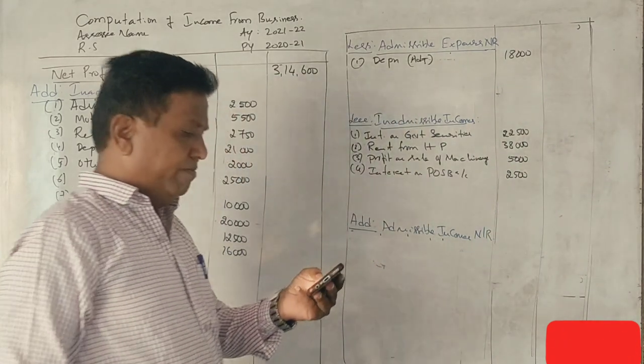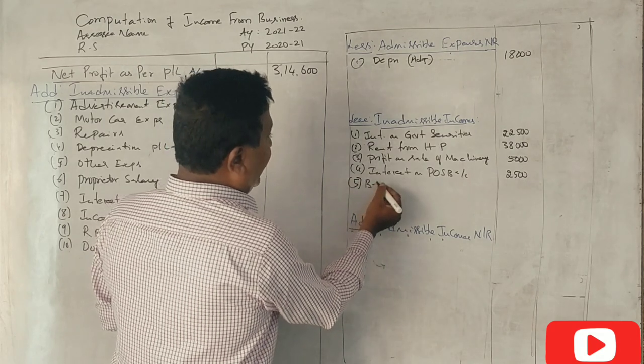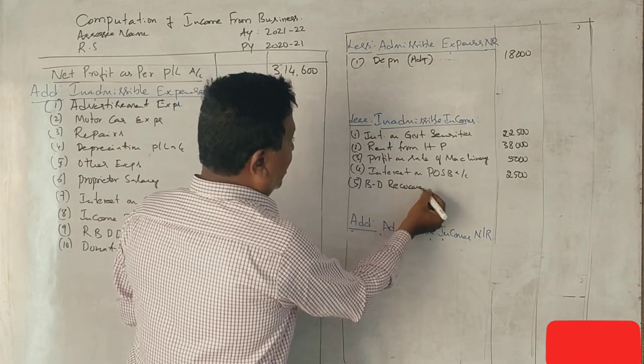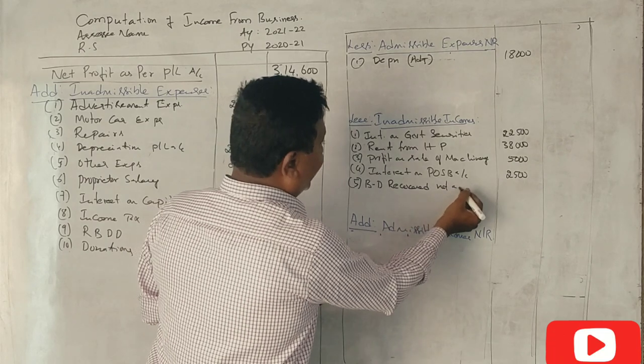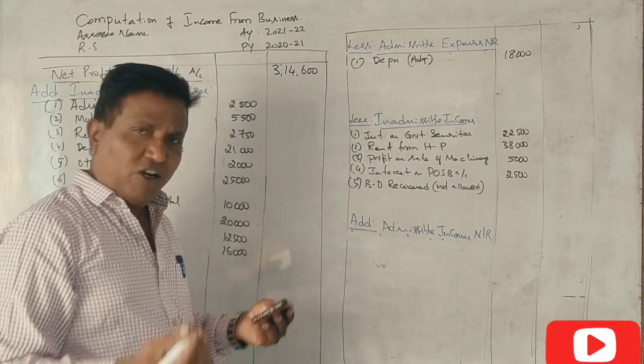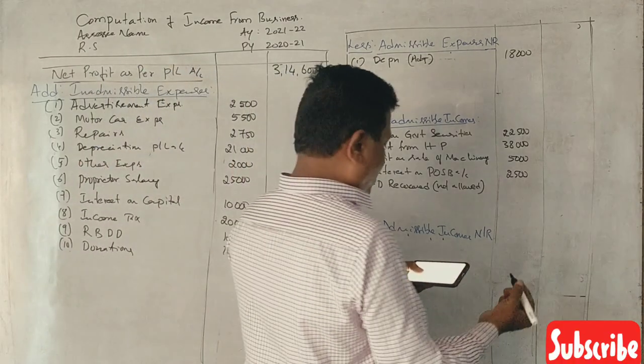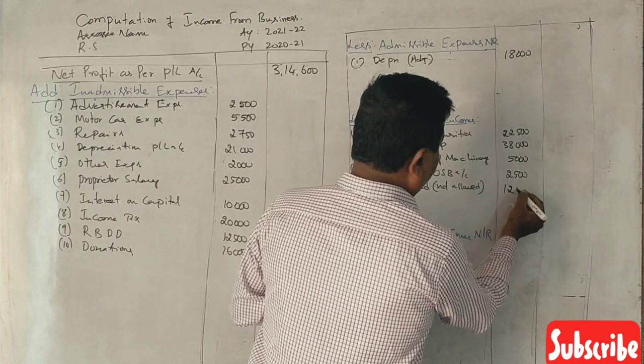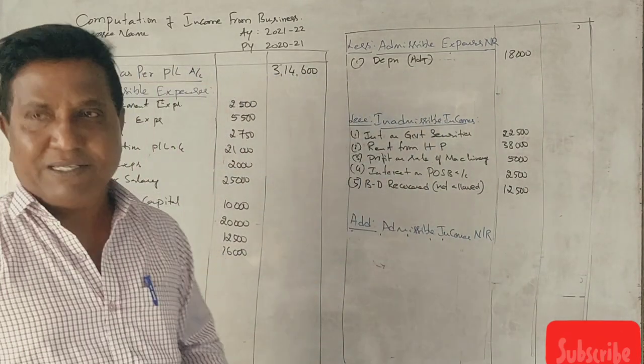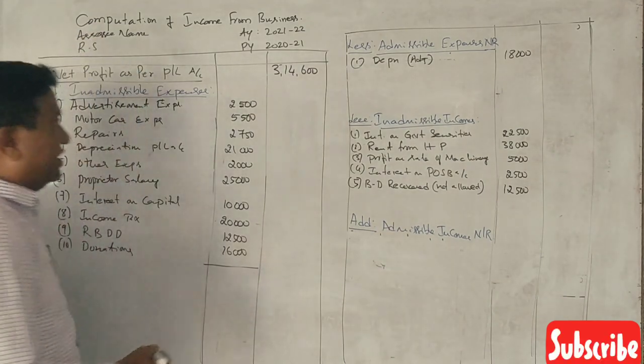Bad debts recovered, not allowed earlier, disallowed. 12,500. Sundry income business, yes sir.